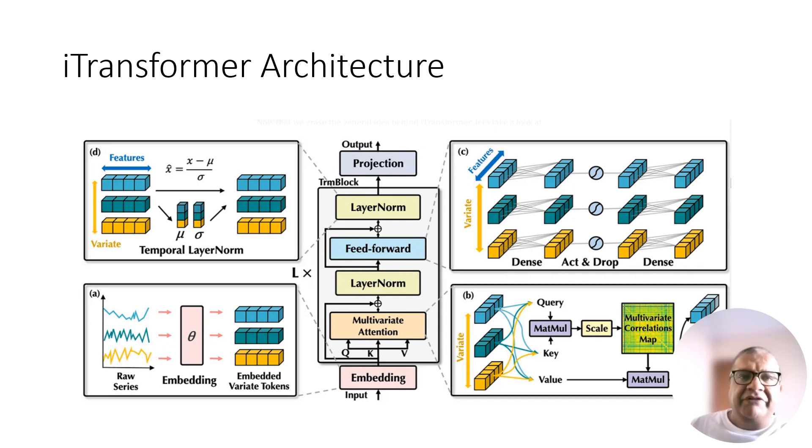Feed-forward networks: The feed-forward network or FNN learns a deep representation of the incoming tokens. Since the shapes are inverted, the multivariate perceptron MLP can learn different temporal properties like periodicity and amplitude. This mimics the capability of MLP-based models like N-BEATS, N-HiTS, and TS Mixer.